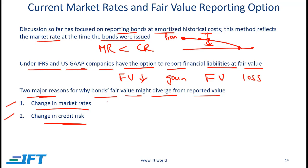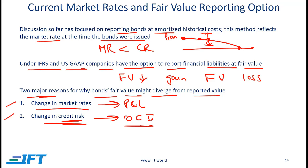The way we deal with gains or losses from these two areas is different. If a bond value changes because of changes in market rates, then the gain or loss is reported in the profit and loss statement — the income statement. However, if the change in value is because of a change in the credit risk of the company that issued the bond, then the gain or loss is reported in other comprehensive income and does not flow through the income statement.